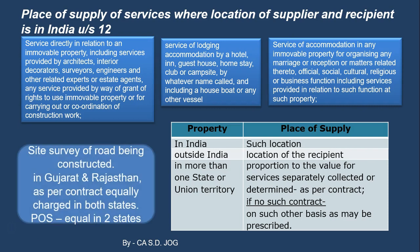Example four: A site survey is conducted for a road being constructed in Gujarat and Rajasthan — the road passes through two different states. As per the contract, charges are split: Rs. 1,00,000 for Gujarat and Rs. 50,000 for Rajasthan. So the place of supply will be split between the two states accordingly — Gujarat and Rajasthan in proportion to the contract value. If there is no agreement, it will be determined as may be prescribed. Depending on the supplier's location, it will be decided whether it is an intra-state or inter-state transaction.